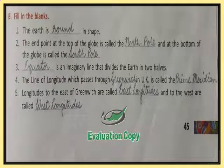Now for the fill in the blanks: the earth is round in shape. The end point at the top of the globe is called the north pole, and at the bottom is called the south pole. The equator is the imaginary line that divides the earth into two halves. The line of longitude which passes through Greenwich in the UK is called the prime meridian. Longitudes to the east of Greenwich are called east longitudes and to the west are called west longitudes.